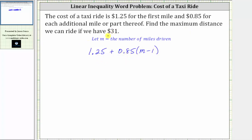And because we have a total of $31 to spend, the total cost must be less than or equal to 31. And now to answer the question, we need to solve the inequality for m.